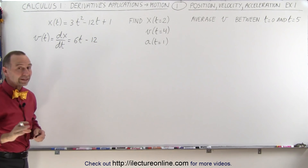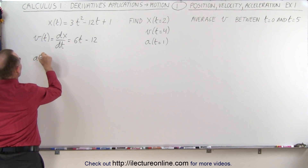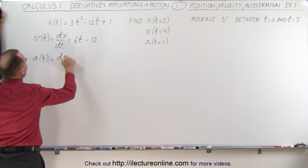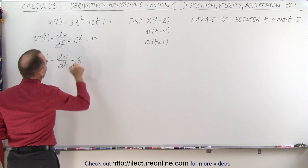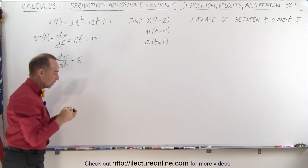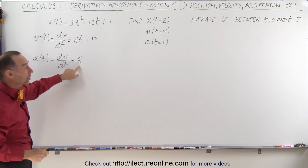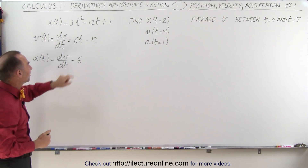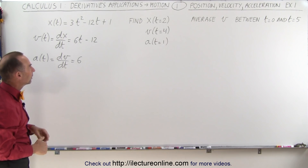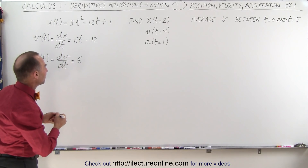Then to find the acceleration, we take the derivative of the velocity equation. The acceleration as a function of time is equal to the derivative of the velocity with respect to time, which is equal to 6. Since 6 does not depend on time, it's simply a constant, meaning acceleration is a constant value.